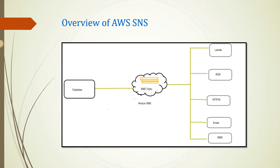Now, what is SNS? Amazon Simple Notification Service is a web service that enables applications, end users, and devices to instantly send and receive notifications from the cloud. It coordinates and manages the delivery or sending of messages to subscribing endpoints or clients.